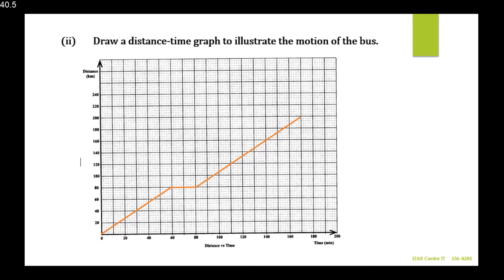The bus arrived early at station B and remained there for 20 minutes. At 60 minutes, 20 minutes later takes us to 80 minutes. Since the bus is stationary, there is a flat line on the distance-time graph from 60 to 80 minutes. After that 20 minutes, it departs from B toward C, taking 90 minutes — so from 80 minutes, 90 minutes later is 170 minutes.